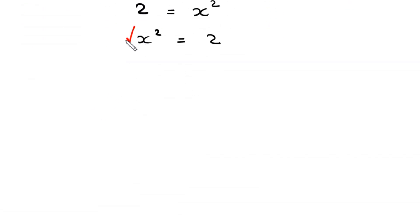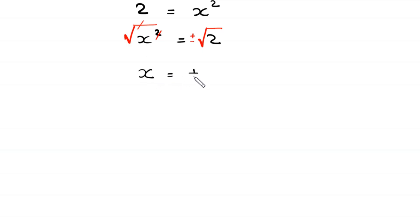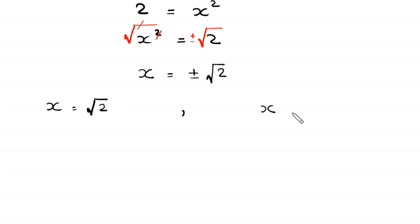Now we take the square root of both sides. The square cancels with the square root, and this becomes x is equal to plus or minus root 2. It means we get two values of x: x is equal to positive root 2, and x is equal to negative root 2. Now let's verify that these are our solutions.